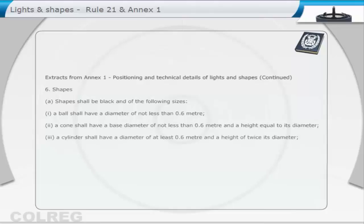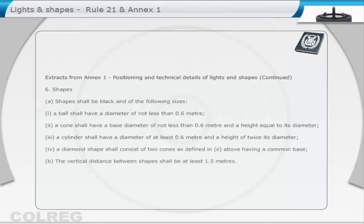A cylinder shall have a diameter of at least 0.6 metre, and a height of twice its diameter. A diamond shape shall consist of two cones, as defined in 2 above, having a common base. The vertical distance between shapes shall be at least 1.5 metres.